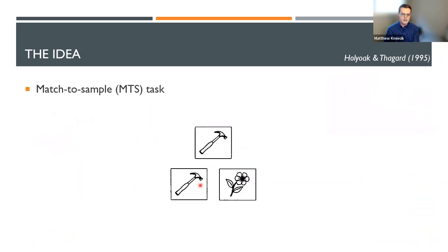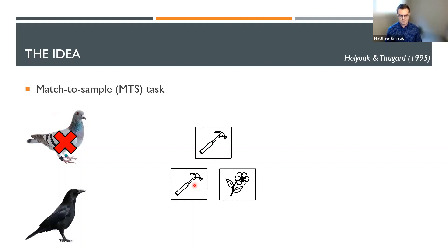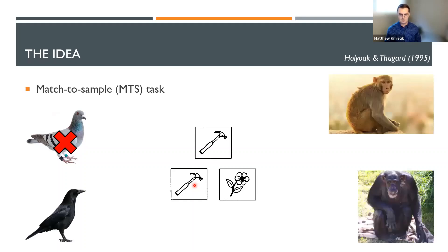After training certain animals on the original match-to-sample task, the gold standard to see if they're really matching things based on relationships rather than sameness of objects is to do a transfer task — presenting different objects, like hammers instead of apples. For us it'd be trivial to select the hammer, but surprisingly certain species are unable to do this transfer task. Pigeons are unsuccessful; crows are able to do this, as are lower primates and chimpanzees.